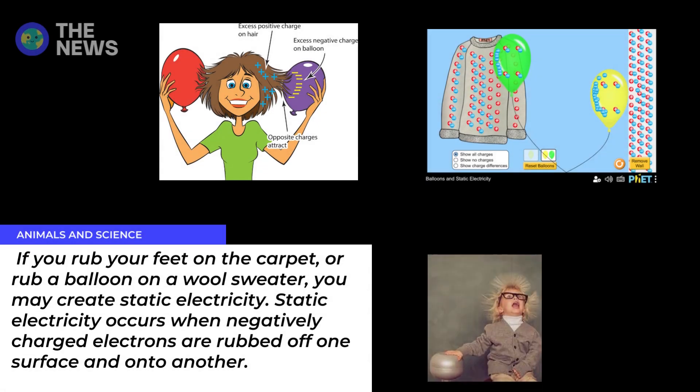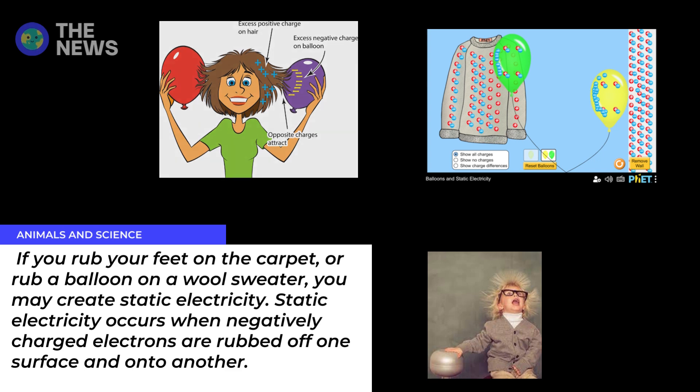If you rub your feet on the carpet or rub a balloon on a wool sweater, you may create static electricity. Static electricity occurs when negatively charged electrons are rubbed off one surface and onto another.